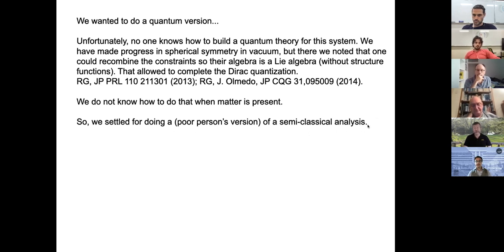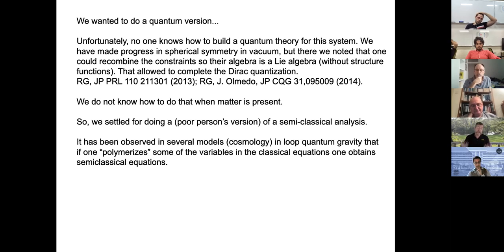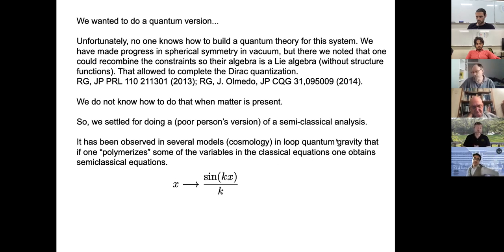Faced with this, we settled for a poor person's version of semi-classical analysis. We cannot do a proper semi-classical analysis either, because you first need a quantum theory in which you study semi-classical states. So we did what we call a poor person's version. It has been observed in several models, particularly in loop quantum cosmology, that if you polymerize some of the variables of the classical equations, you obtain the semi-classical equations. The idea is that in loop quantum gravity, one works on a Hilbert space where the connection itself is not a well-defined operator, but its holonomy — the exponential, or sine, since it must be real — is.